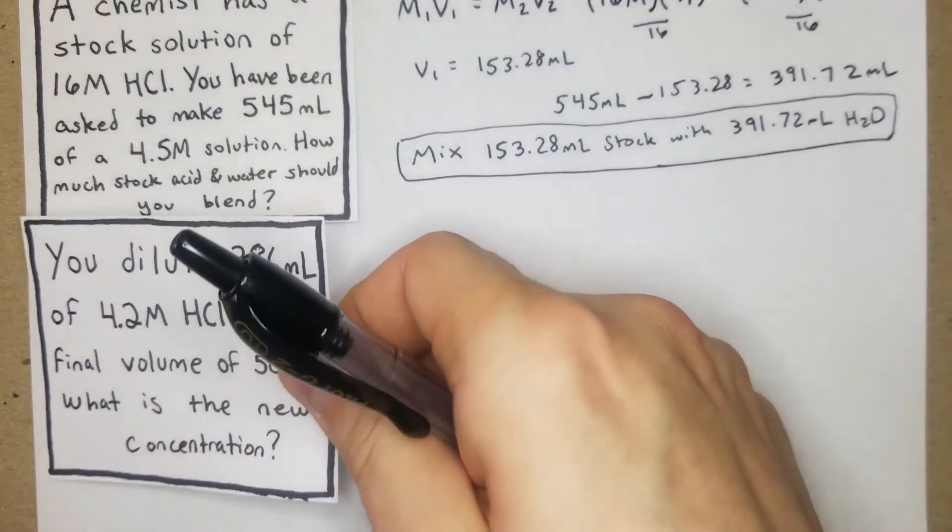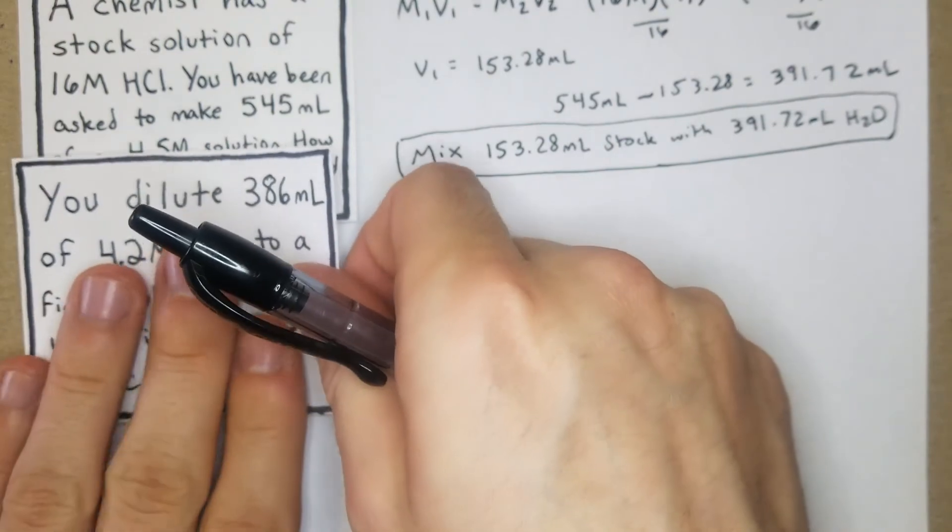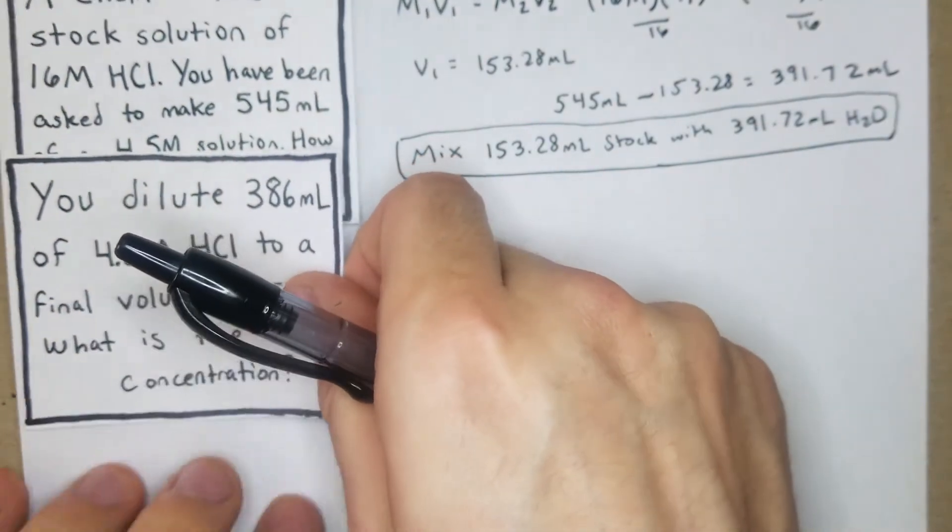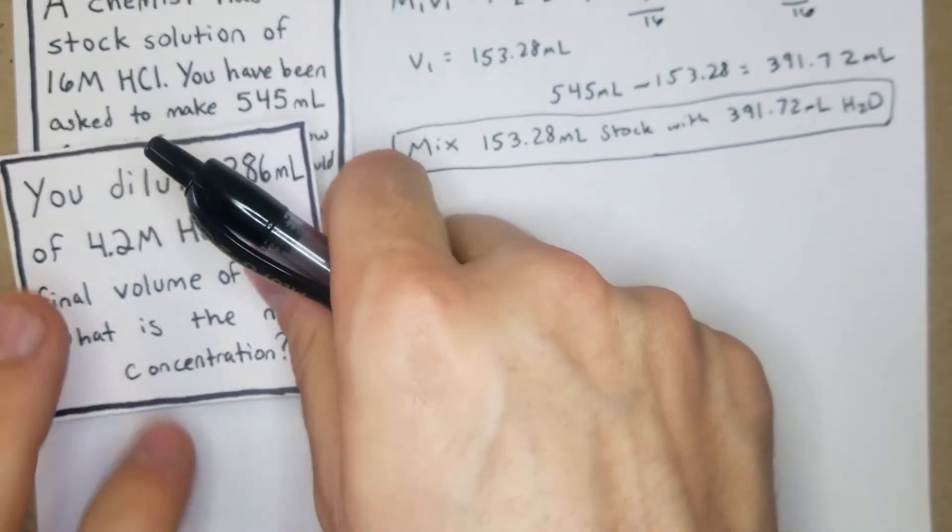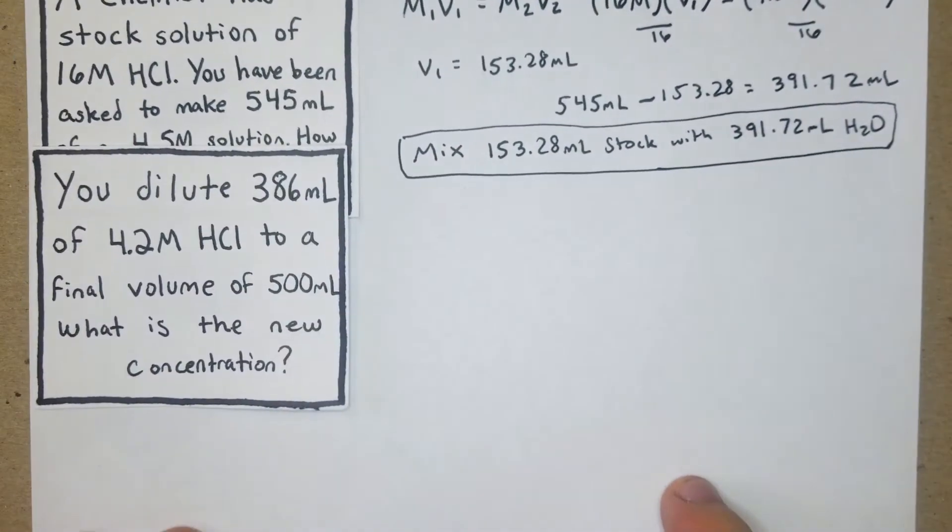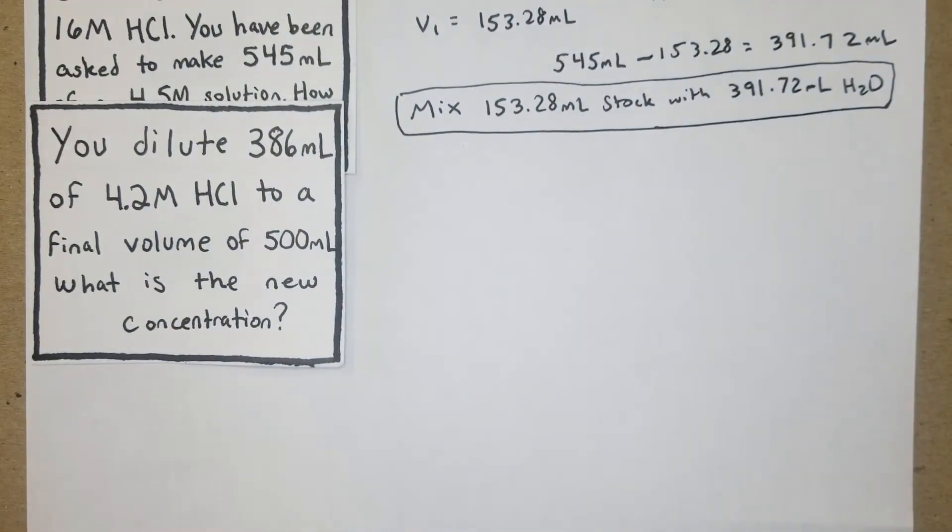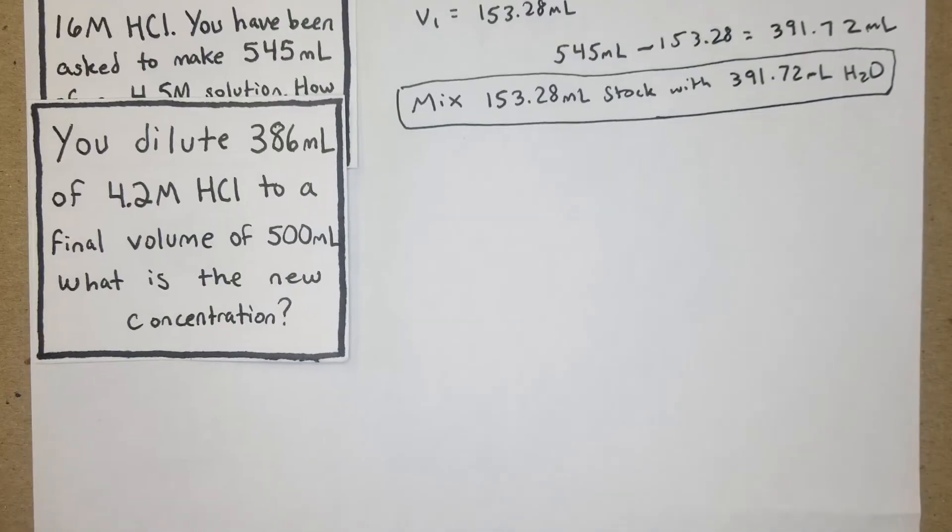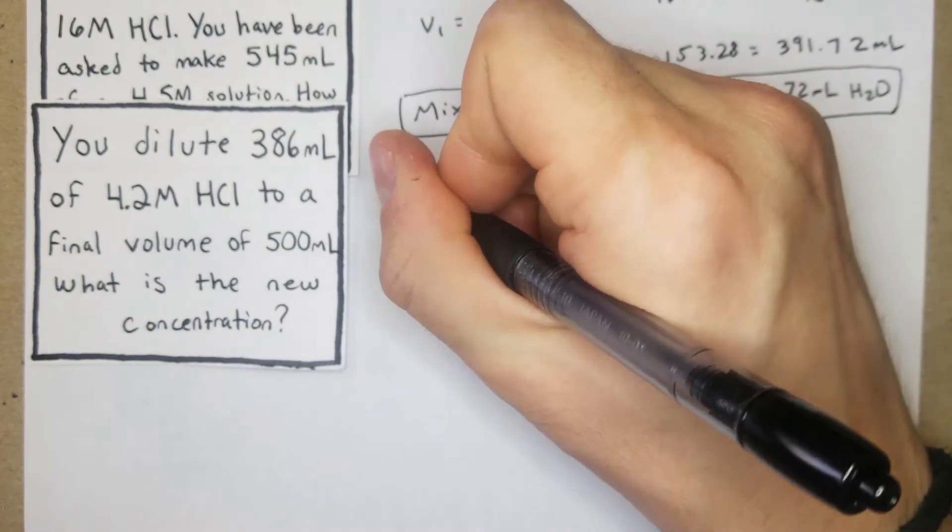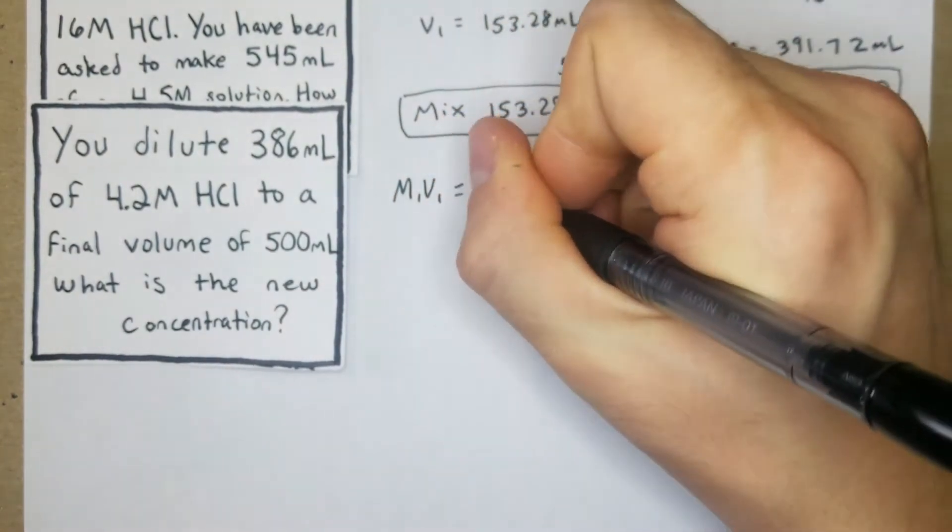So like I said, that's a pretty straightforward one. And I think they're going to get a little bit more complex. And then we're going to kind of build to one that is pretty difficult. So our next one, you dilute 386 mL of 4.2 molar HCl to a final volume of 500 mL. What is the new concentration? So again, this is going to be pretty straightforward.